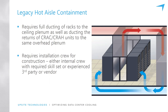Cold aisle containment is much more common. The advantages of hot aisle containment — which is the example we're looking at — is that if you're fully containing the hot air, then the rest of the room becomes cold and the placement of supply tiles is not as critical. The air is free to flow around the room and make its way to where it's needed. The room feels cool, airflow is managed more easily, and any leakage of conditioned air through the raised floor goes into the general space for cooling. Hot aisle containment tends to be more efficient because it tends to be done more effectively.